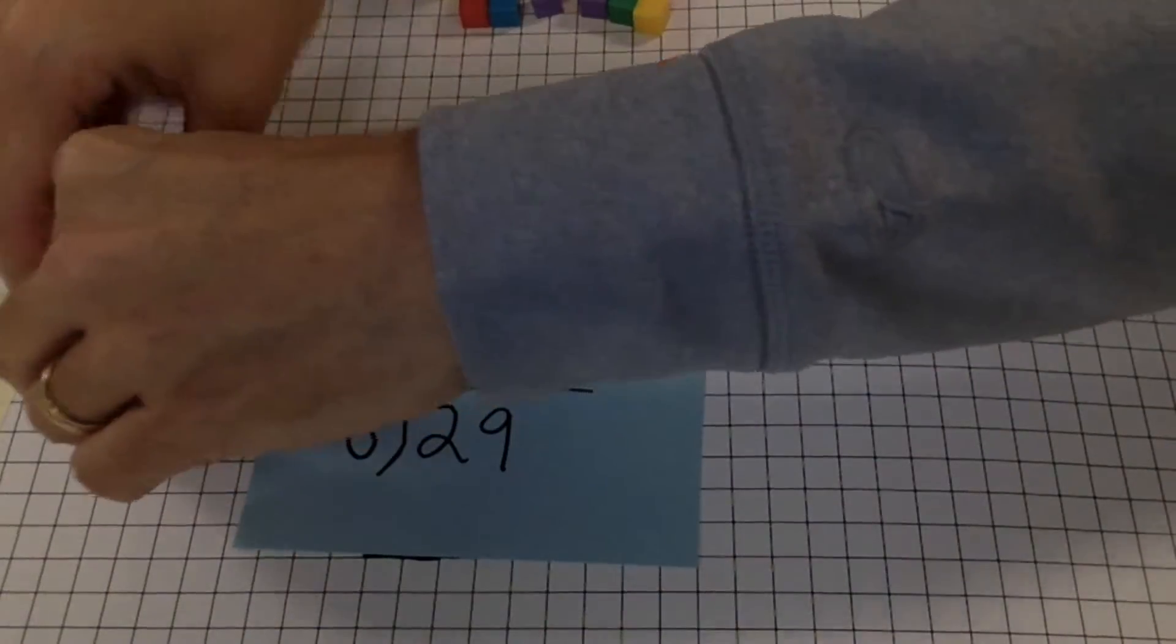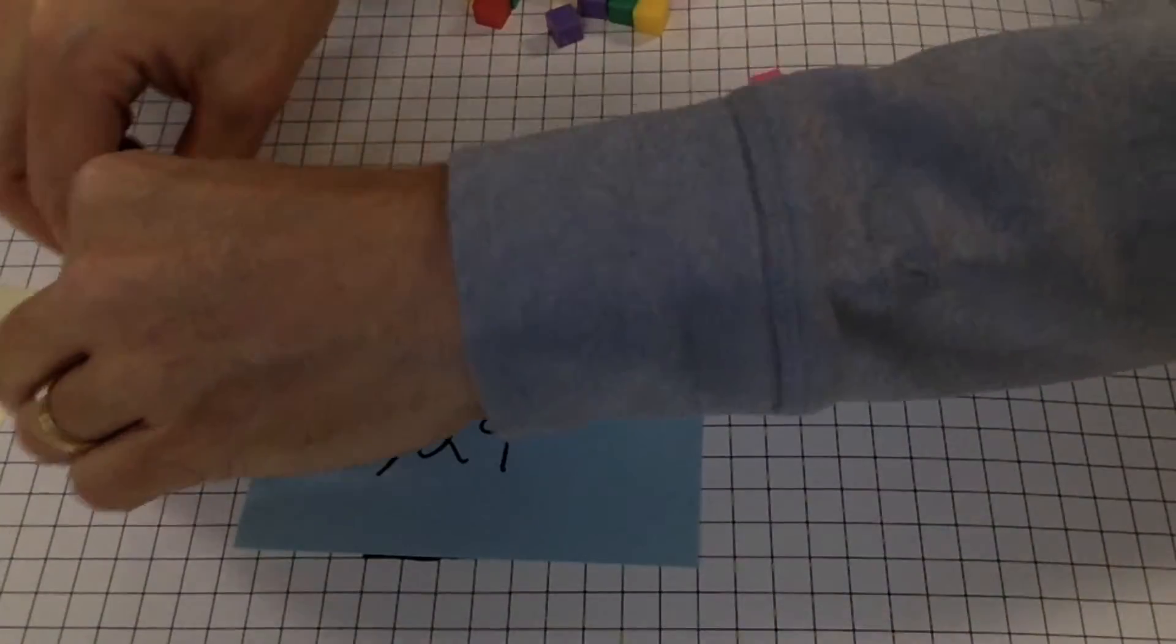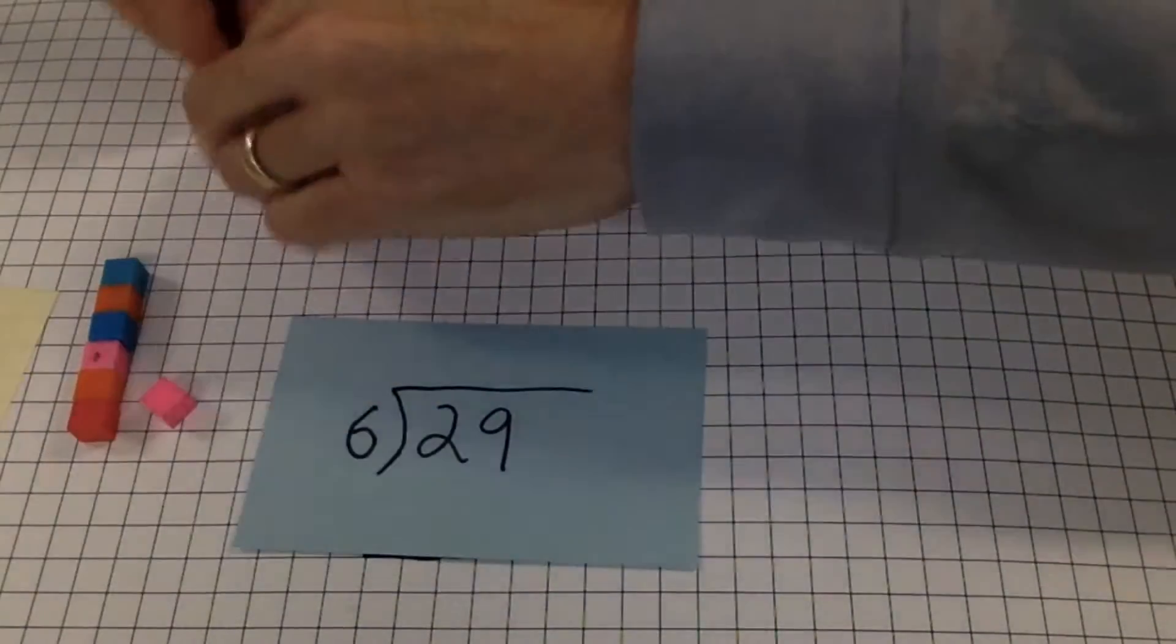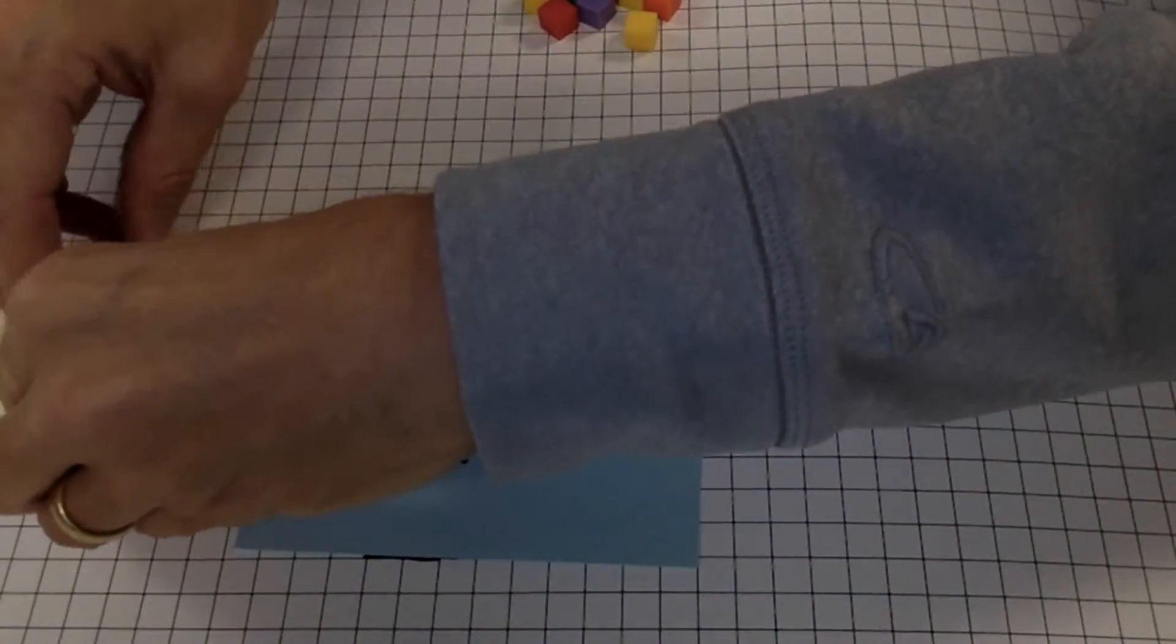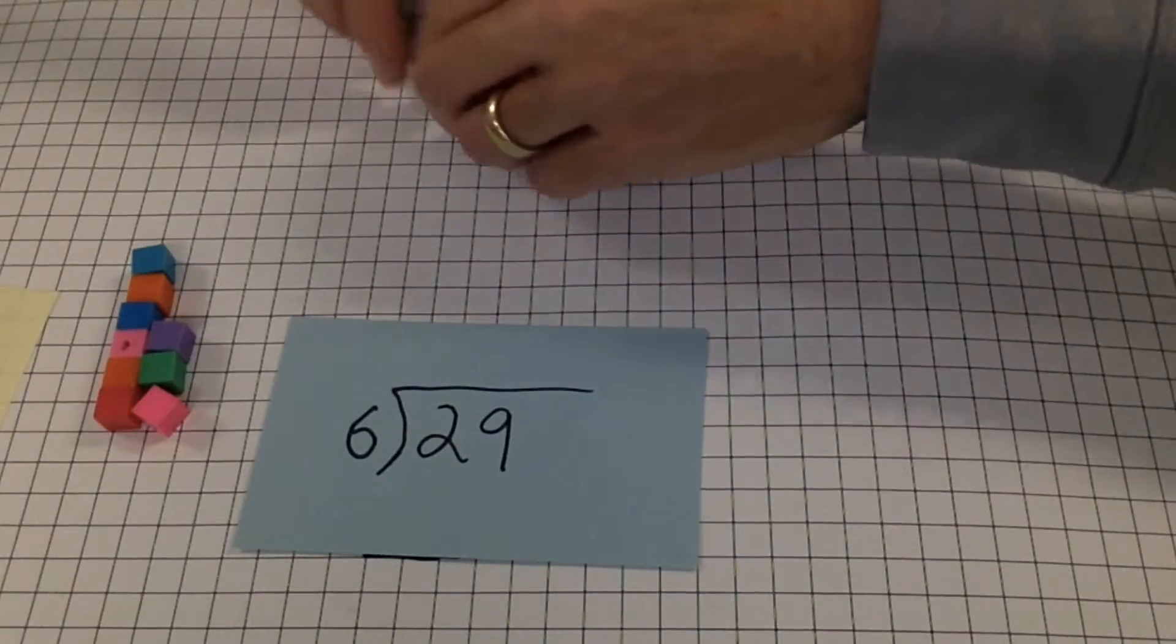1, 2, 3, 4, 5, 6, 7, 8, 9. I know my 3s. I'm going to count by 3s this time.